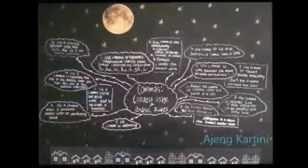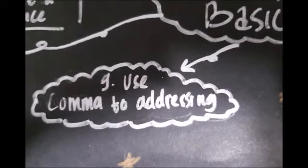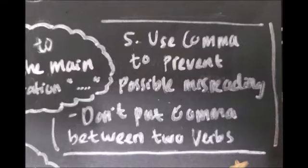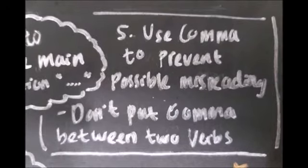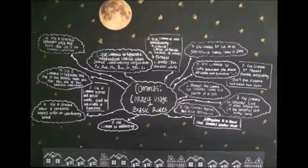Commas: correct usage and basic rules — there are 13 points. One of them is to always use a comma to separate items in a series or a list. Use a comma when addressing and to prevent possible misreading. But don't put a comma between two verbs. Use a comma to separate the day of the month.